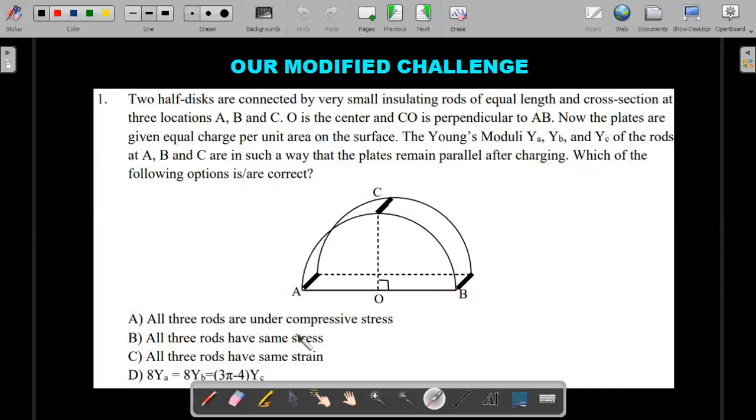Which of the following options is or are correct? There are four options. First one is about compressive stress in each rod. Second is whether those rods are under same magnitude of stress. Third is about the strain. And the fourth is some relation between the Young's moduli under the given conditions.